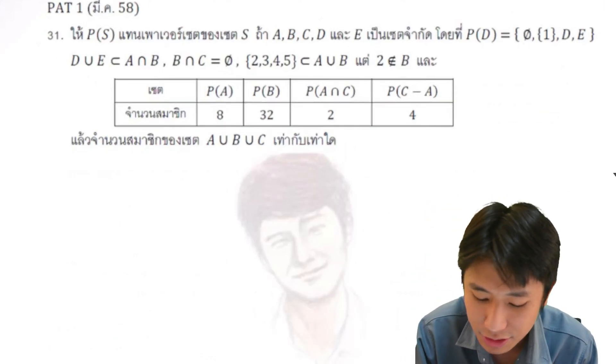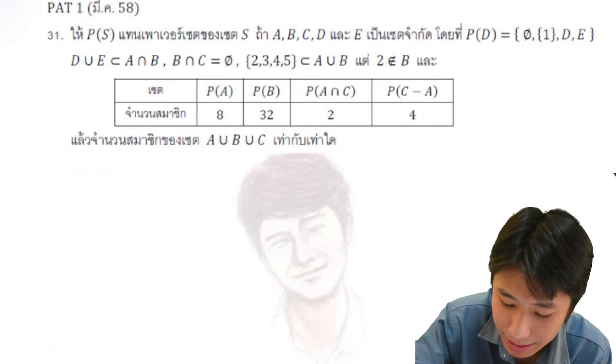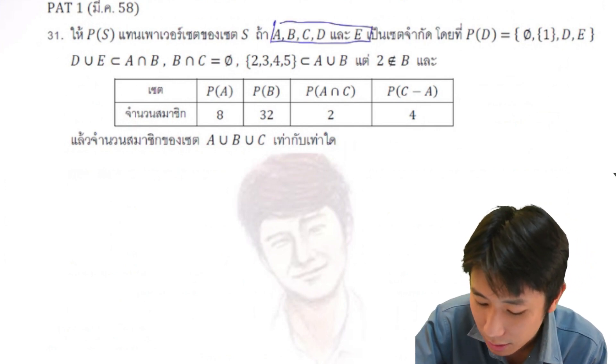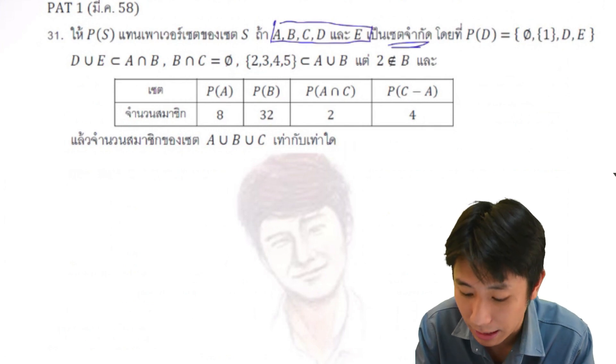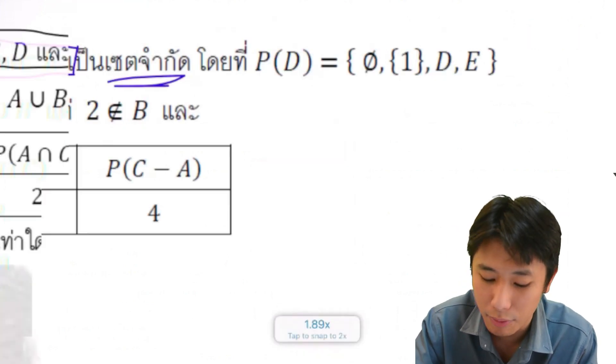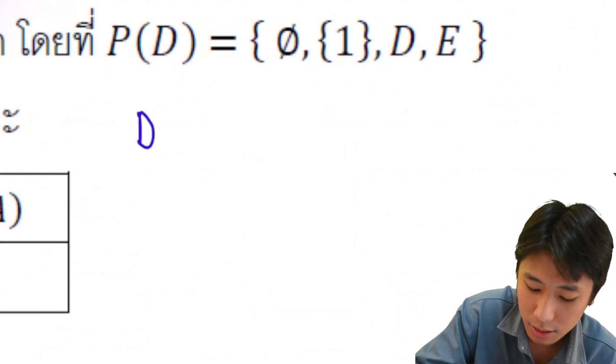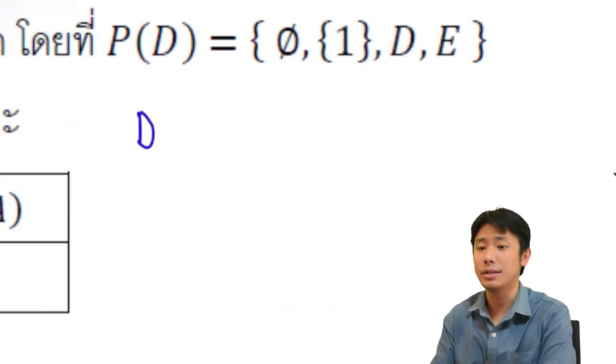This is the power set of this session. So with the A, B, C, D, E, it's a set. So with the P(D), it's called, I'll go first. Where did you find? What's your name? We'll go first. This is the first thing.